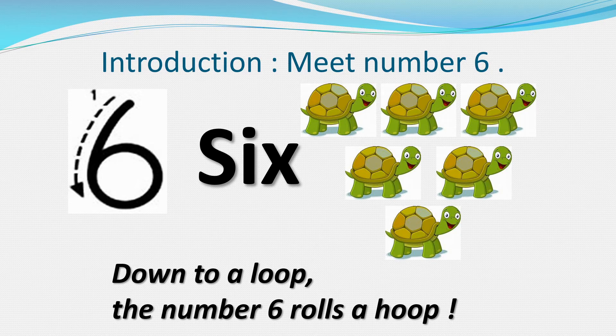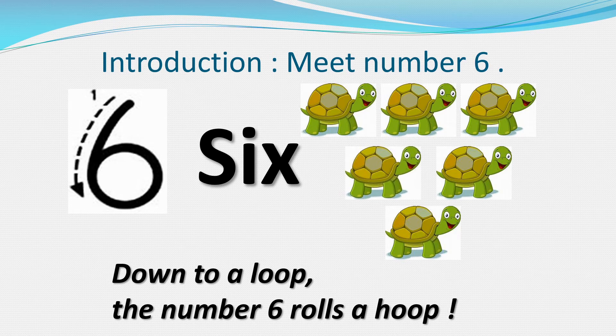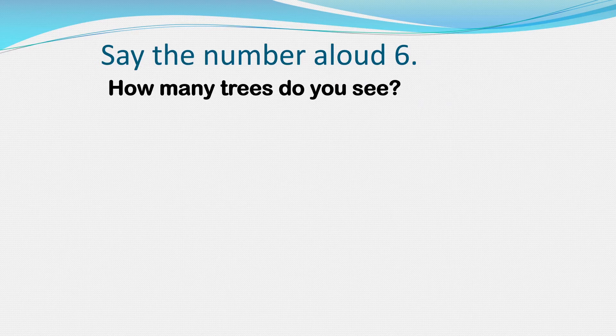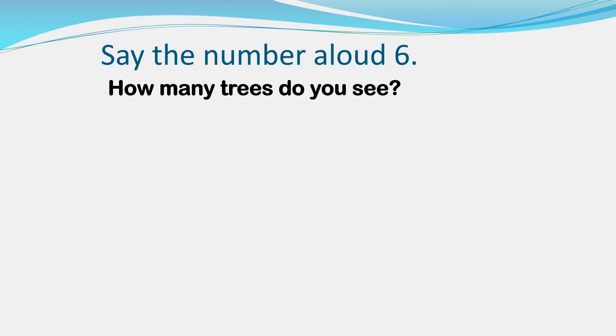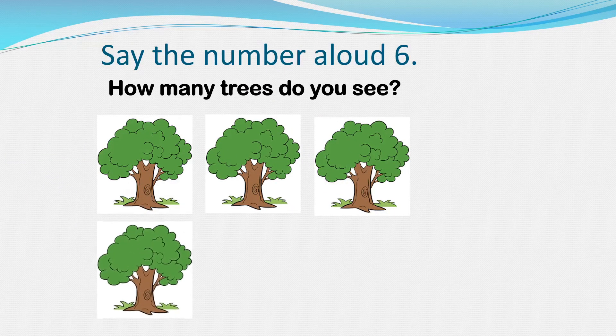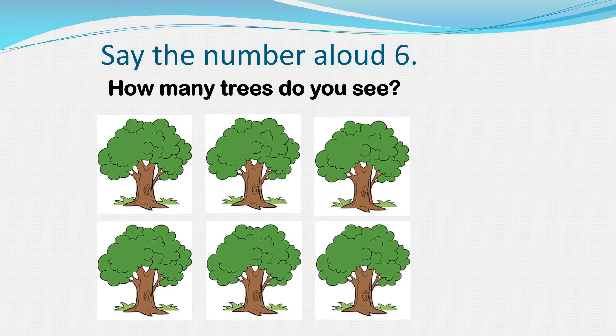Okay, let us count some turtles. One, two, three, four, five and six. So we can count six turtles. Say the number six kids. How many trees do you see? Count it. One, two, three, four, five and six. So we can see six trees.